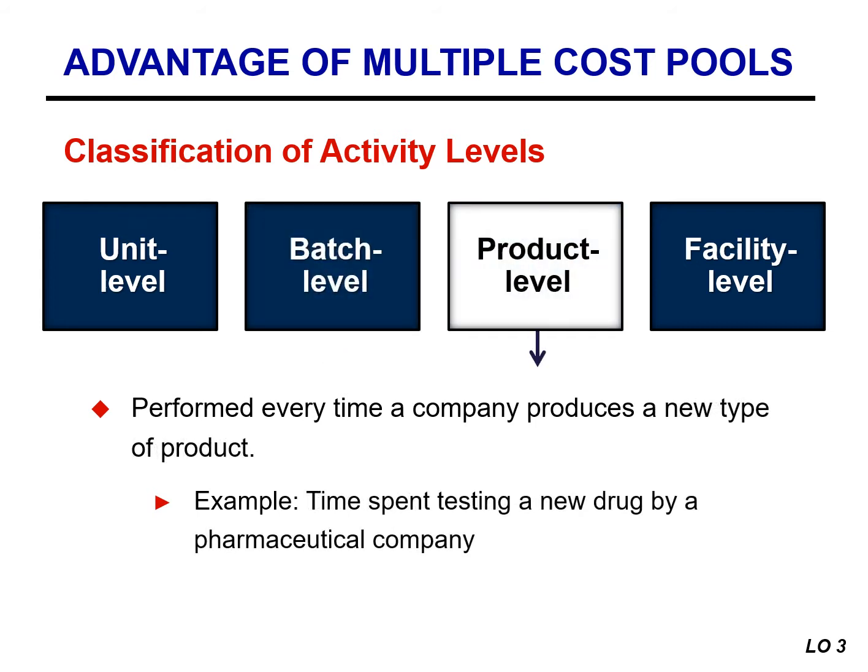Product level activities are performed every time a company produces a new type of product. For example, before a pharmaceutical company can produce and sell a new type of medicine, it must undergo very substantial product tests to ensure the product is effective and safe. The amount of time spent on testing increases with the number of products the company produces.